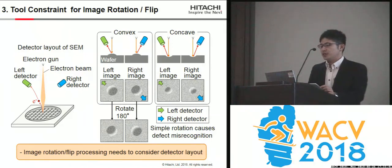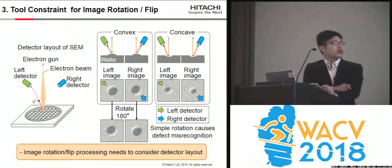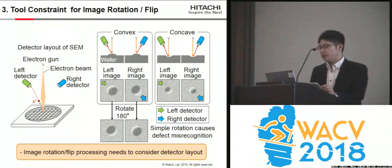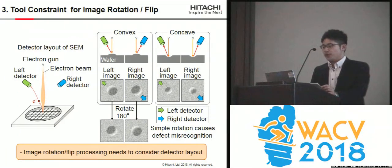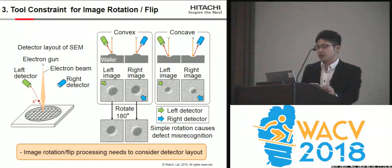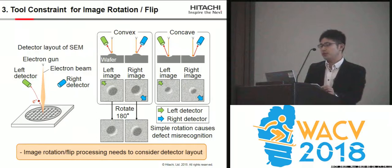SEM images are seen as if they were illuminated from the detector directions. As you can see, the left image of a convex defect is similar to the right image of a concave defect. Therefore, if the convex images are simply rotated, they become almost the same as the concave images. Since the ADC recognizes defect topography on the basis of these images, simple rotation causes defects to be misrecognized.